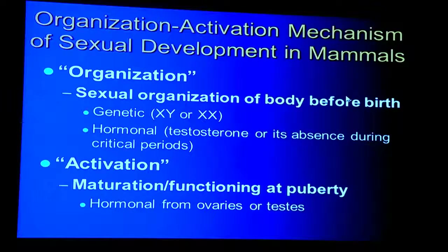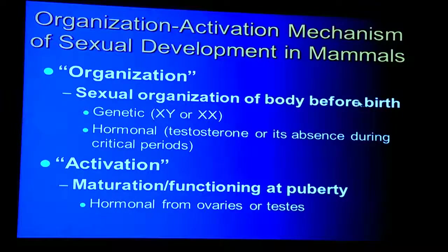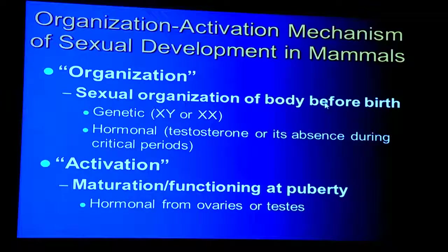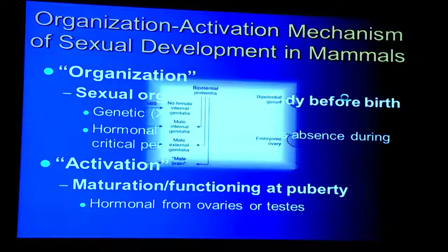Physiologists call the mechanism of sexual development in mammals the organization-activation mechanism. Our genitalia are organized before we are born, first under the influence of genes and then hormonal influence — the important variable being whether testosterone is present or absent during critical periods of development. We come into the world with genitalia already shaped, but they are not mature and not working yet. That happens with activation hormones from the gonads at puberty.